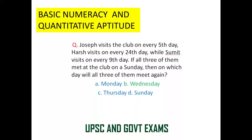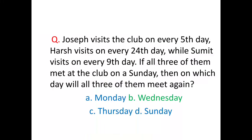Today we will see a question of basic numeracy and quantitative aptitude. This question has been asked many times in various competitive exams. The question is very unique but also very simple. In all these exams the questions are actually very simple, but the methods are not fixed. The question reads: Joseph visits the club on every 5th day, Harsh visits on every 24th day, and Sumit visits on every 9th day. They are meeting on a particular Sunday. So when are they going to meet again?